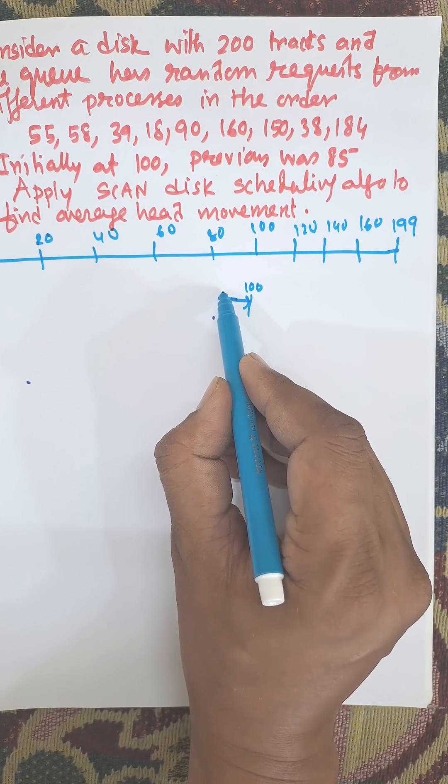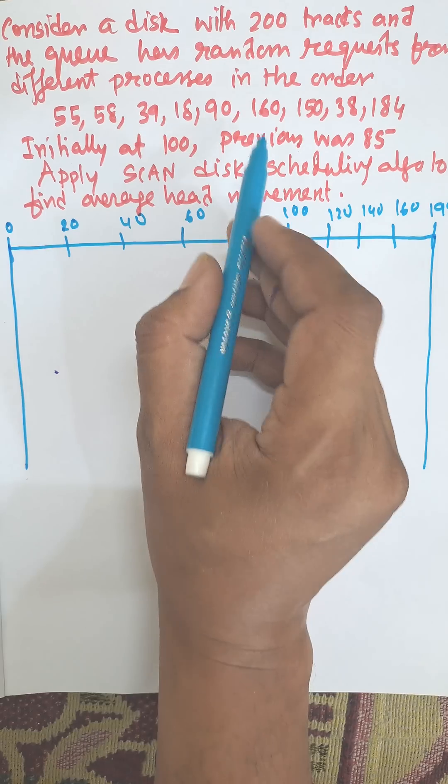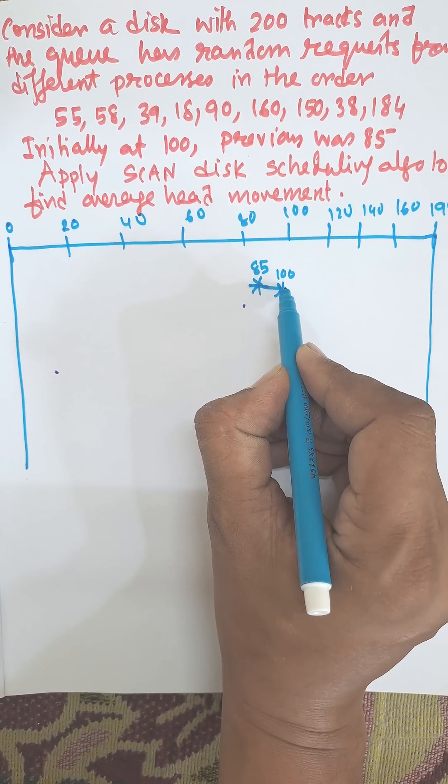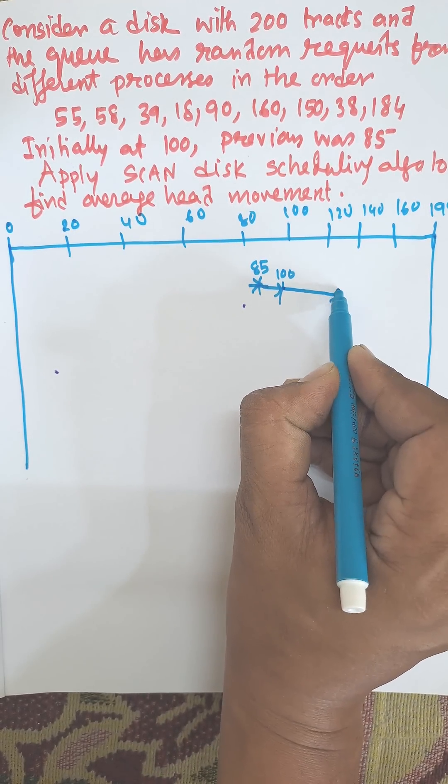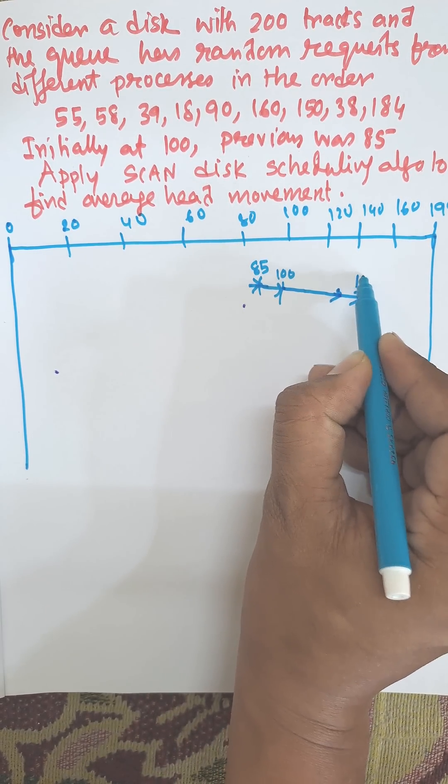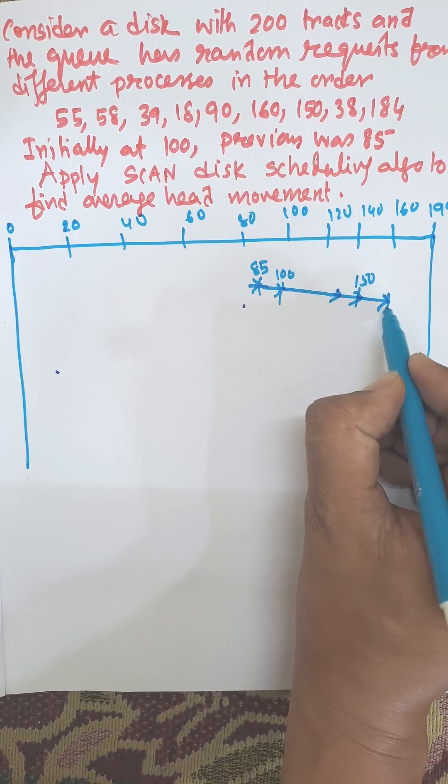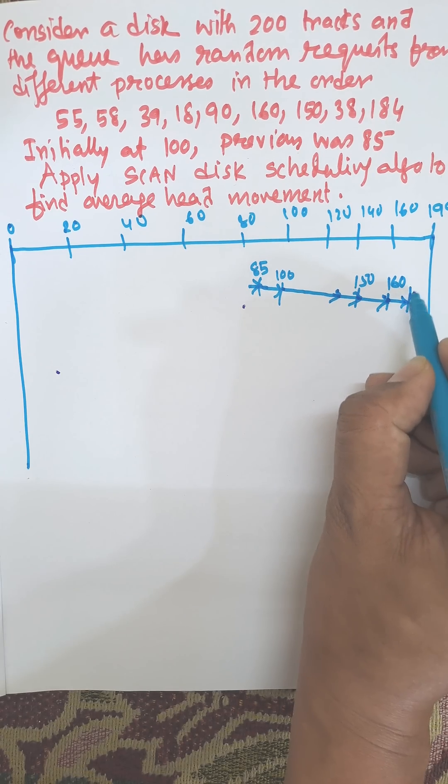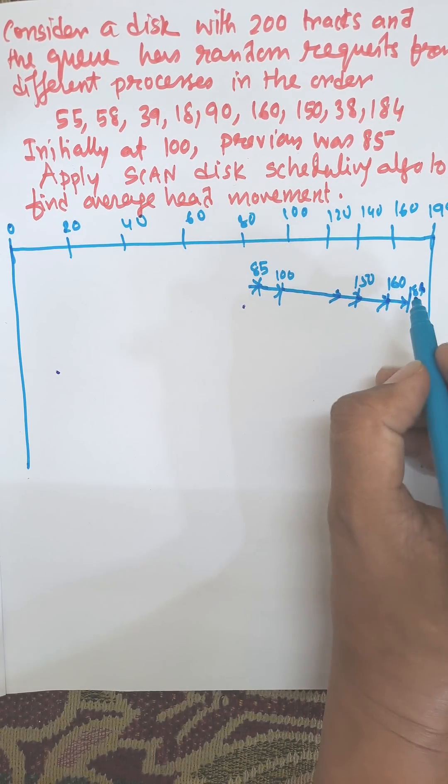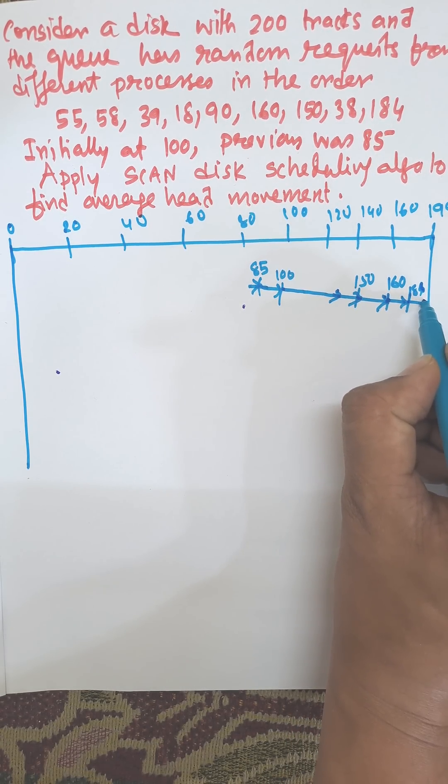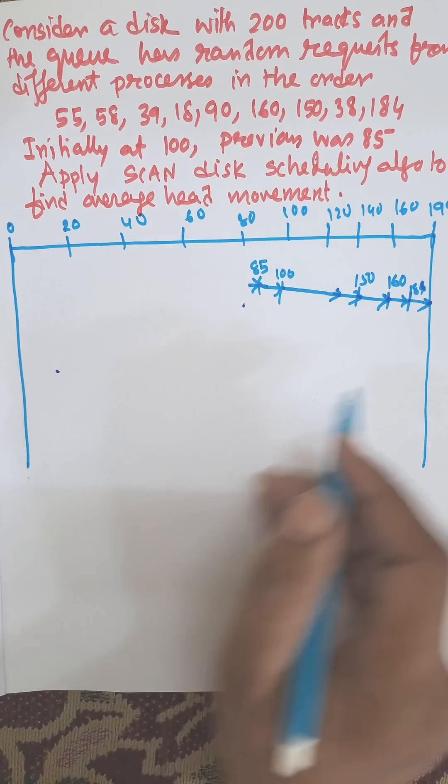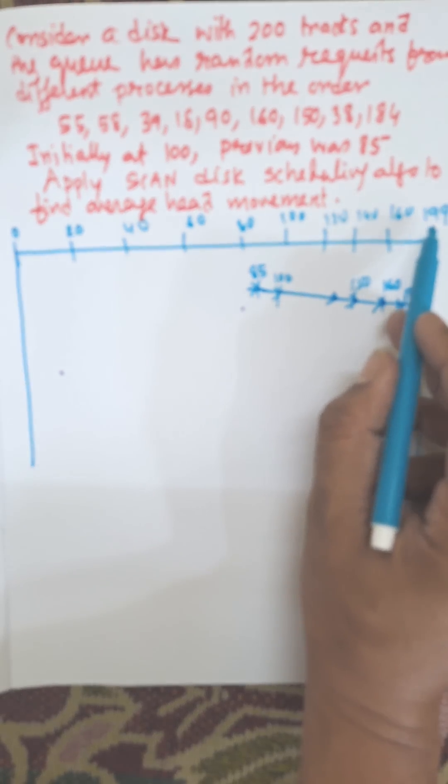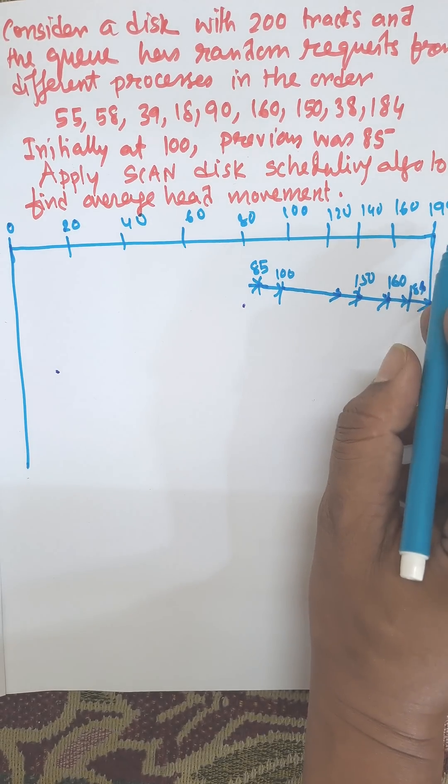Previous was 85, it makes nodes in the path: 150, then 160, then 184. Then it will hit the 199 track. According to the algorithm, it will touch the rightmost track up to 199.